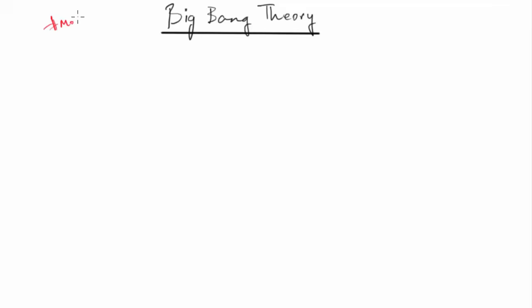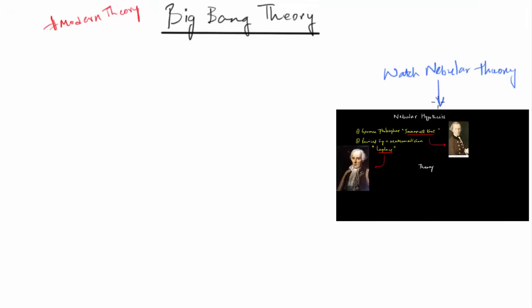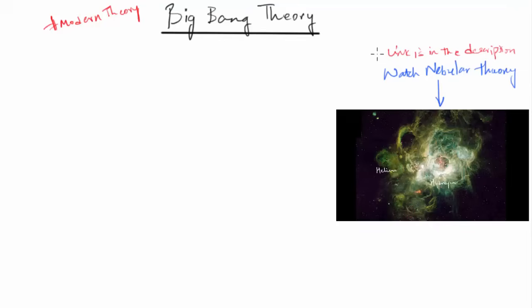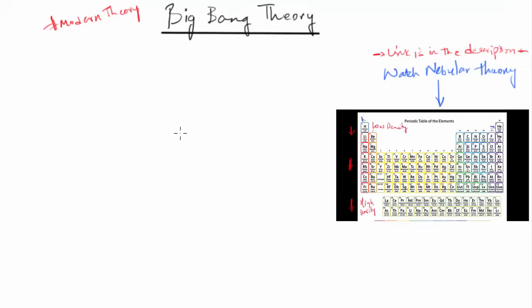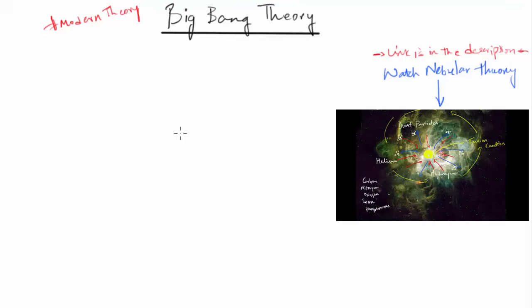Big Bang Theory. It is the modern theory in terms of the origin of Earth. If you remember how nebular hypothesis is the early theories, and in that we read about the formation of sun, stars, planets, asteroids, etc.